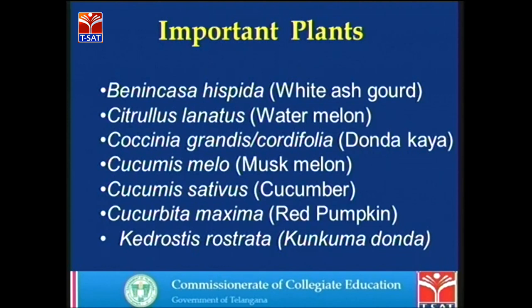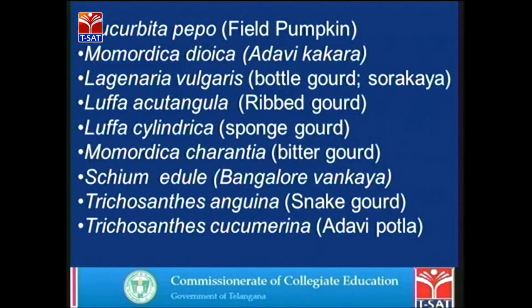Some important plants of this family include: Benincasa hispida (white ash gourd), Citrullus linatus (watermelon), Coccinea grandis, Cucumis melo (muskmelon), Cucumis sativus (cucumber), Cucurbita maxima (red pumpkin), Cucurbita pepo (field pumpkin), Momordica dioeca, Lagenaria vulgaris (bottle gourd), Luffa acutangula (ribbed gourd), Luffa cylindrica (sponge gourd), Momordica charantia (bitter gourd), Trichosanthes anguina (snake gourd), and Trichosanthes cucumerina.